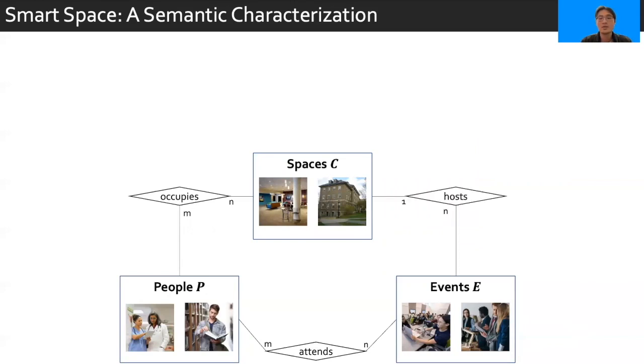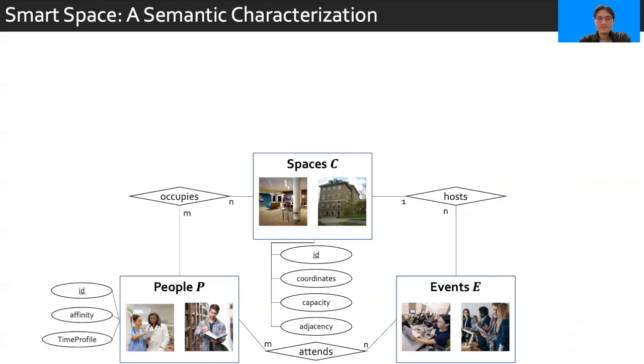We characterize spaces by their coordinates, capacity, and set of adjacent spaces. For people, affinity describes the person's likelihood of attending a certain type of event. For example, a student might be more inclined to attend a lecture event over a seminar event. And then the time profile of a person, on the other hand, describes the times for which a person enters or exits a smart space on any given day.